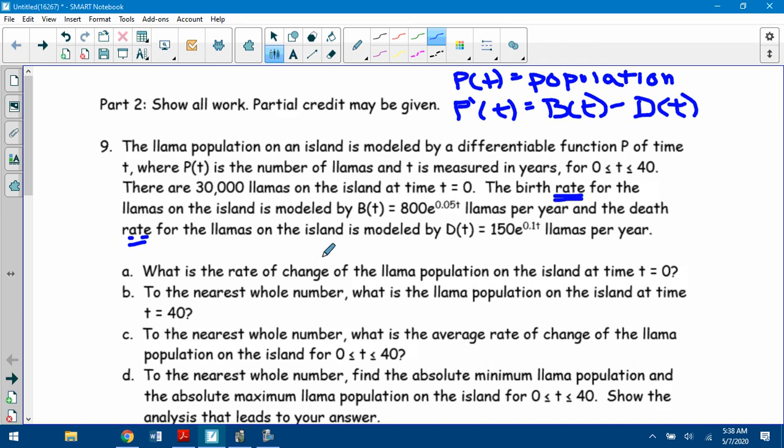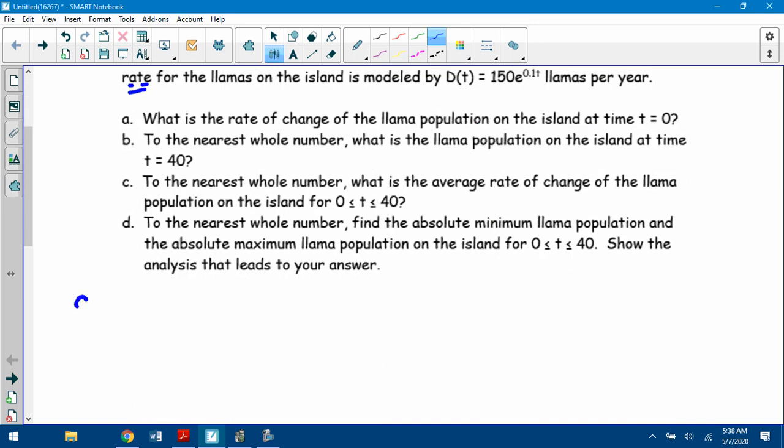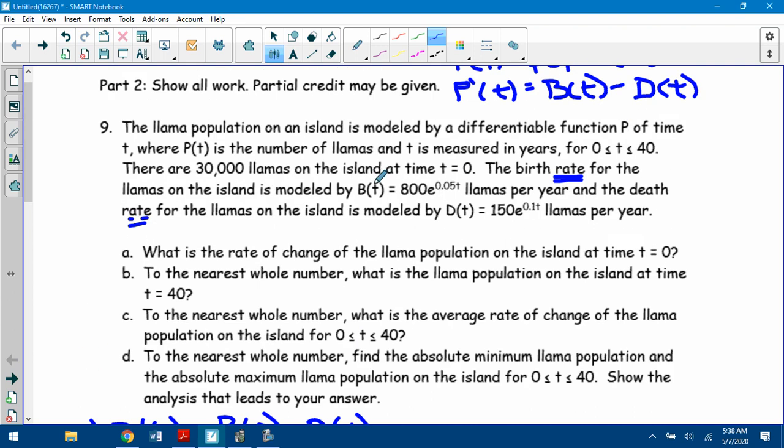So part A says, what is the rate of change of llama population of the island at t equals 0? The rate of change is P prime. So for part A, you should be finding P prime of 0, which is just B(0) minus D(0). Some of you tried to take the derivative of B and D, and that's just, that'd be the second derivative. That'd be P double prime of t.